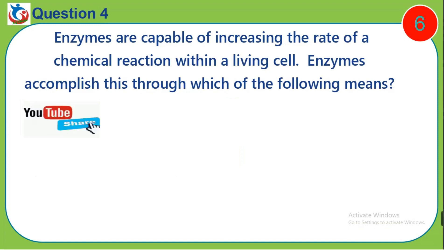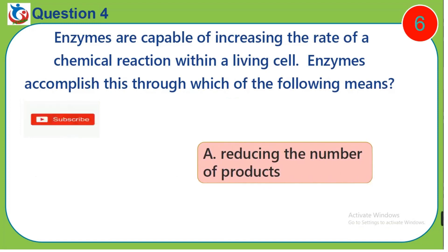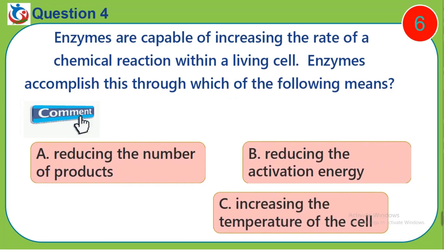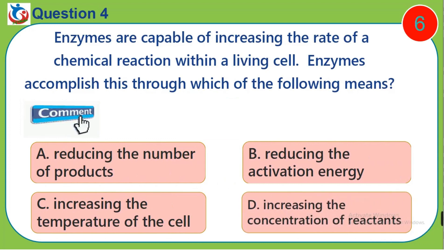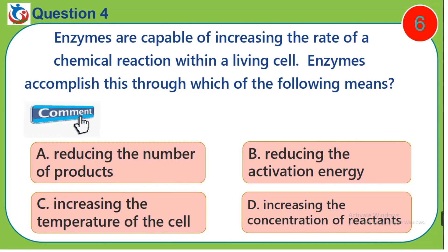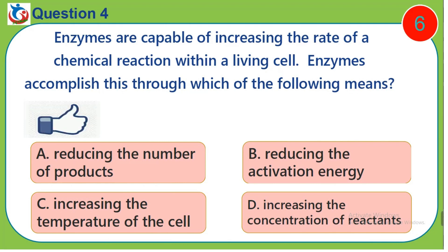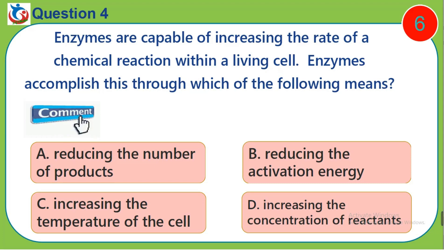Question 4. Enzymes are capable of increasing the rate of a chemical reaction within a living cell. Enzymes accomplish this through which of the following means? A. Reducing the number of products. B. Reducing the activation energy. C. Increasing the temperature of the cell. D. Increasing the concentration of reactants.